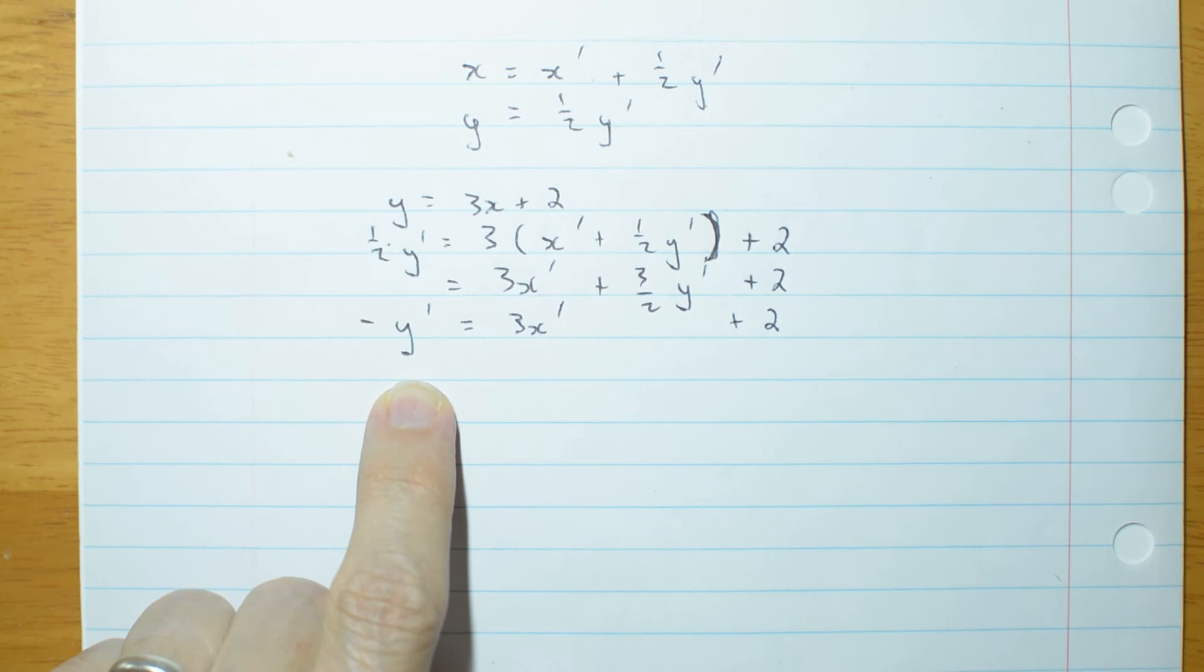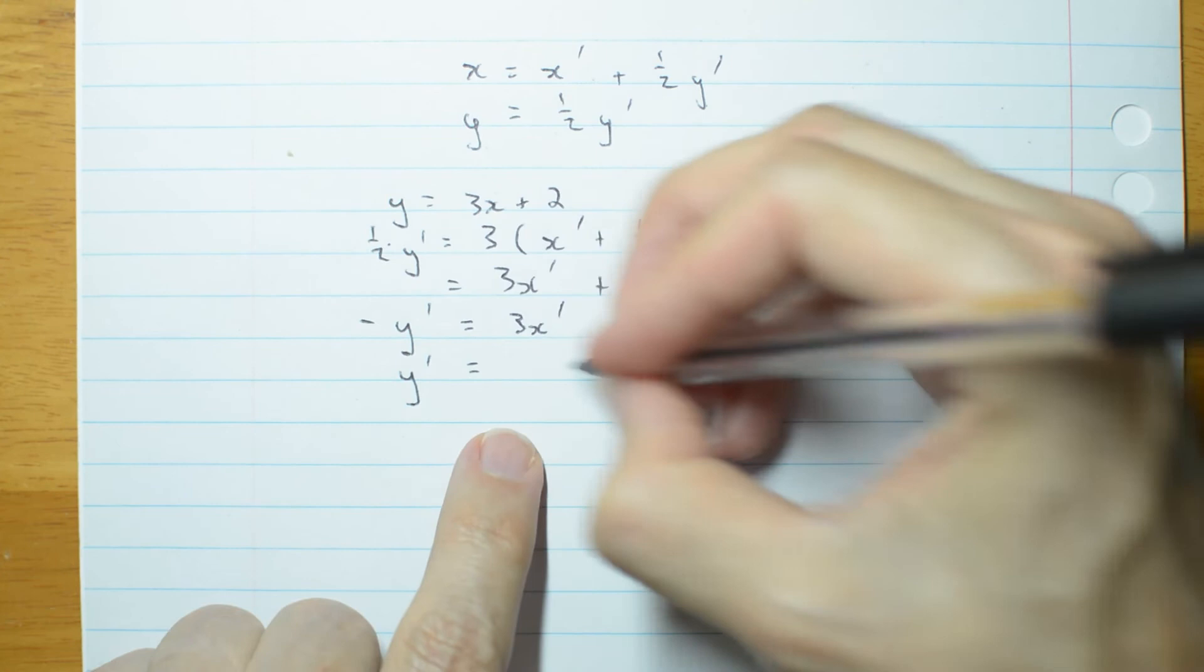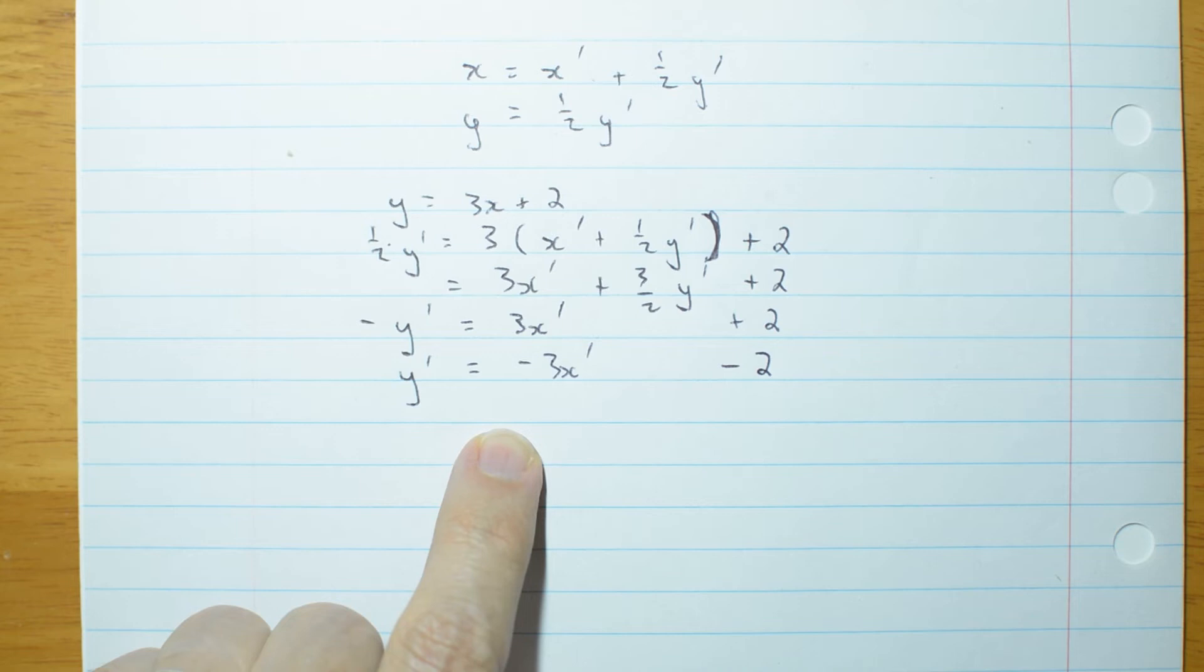Normally we write with a positive here. Y primed is negative 3x primed, take away 2.